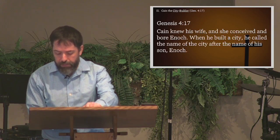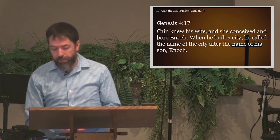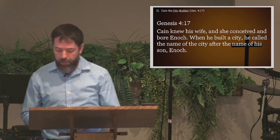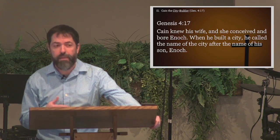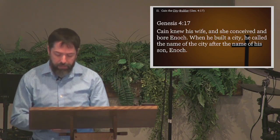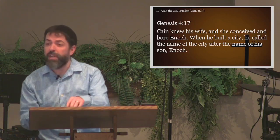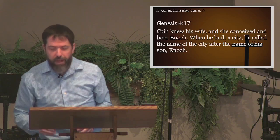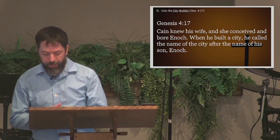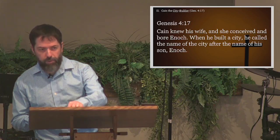Cain knew his wife, and she conceived and bore Enoch. When he built a city, he called the name of the city after the name of his son, Enoch. It's reasonable to expect that Adam and Eve have continued being fruitful and multiplying, presumably producing daughters in the intervening years. Moses will speak of their having other sons and daughters besides the ones named in the narrative in chapter 5. Thus, we should see Cain marrying one of his sisters. If all humanity descends from a single pair of ancestors, then the sons and daughters would have to marry each other. As population expands, this kind of intimate relationship becomes both unnecessary and unwise, and even potentially biologically harmful, and we see the Mosaic Law thousands of years later forbidding such relationships. But here, at the dawn of history, there's nothing to criticize or question in marrying one's sibling.